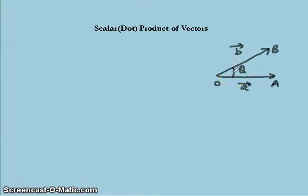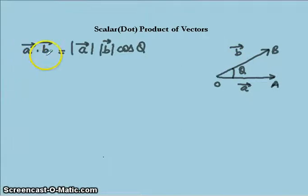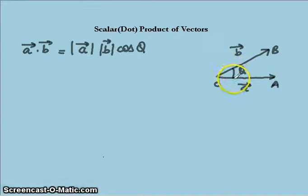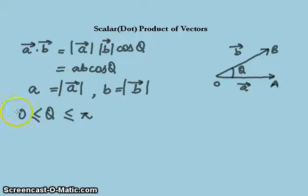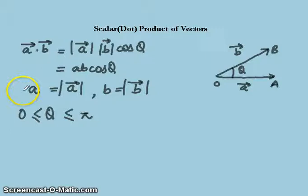The value of theta lies between 0 to pi. The product of these two vectors a and b is represented as a dot b, which is equal to the modulus of vector a multiplied by the modulus of vector b multiplied by cos theta, where theta is the angle formed between the two given vectors a and b. This equals ab cos theta, where a equals mod of vector a, b equals mod of vector b, and theta lies in the interval 0 to pi.